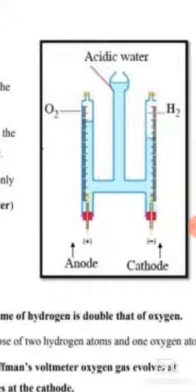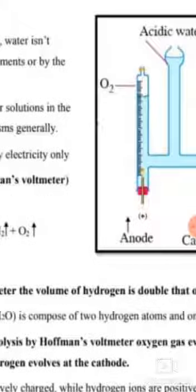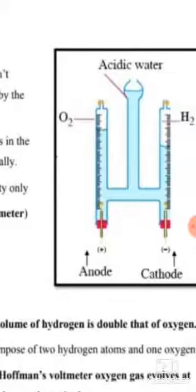As shown in the figure, there is a positive anode and negative cathode. We put acidic water by adding some acid, hydrochloric or sulfuric acid, because acidic water is a good conductor of electricity.